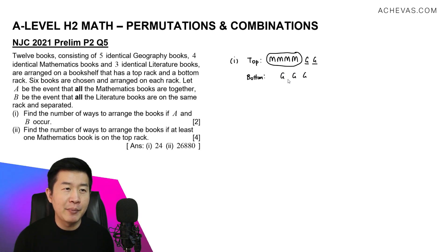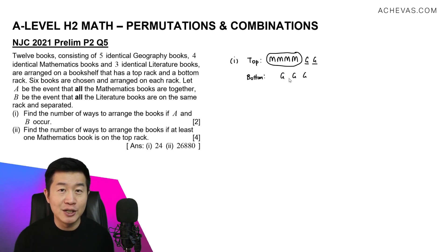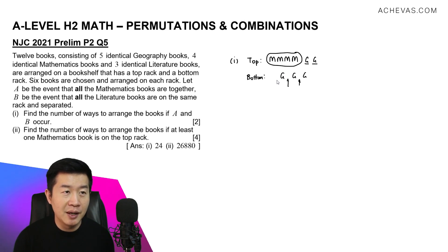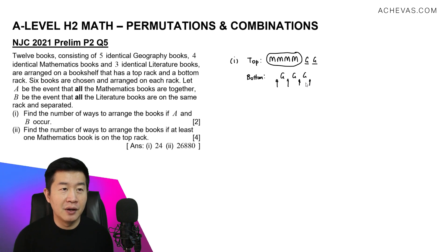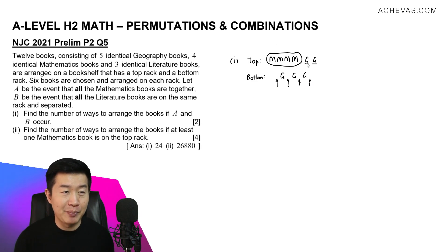I'm going to use the slotting method discussed in our Achievers TV topic outline to ensure the literature books are always separated. We slot the three literature books into one of the four possible spaces available in the bottom rack. Let's calculate the number of ways this can happen.